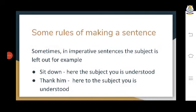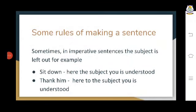In other words, we must have a subject to speak about, and we must say something — or predicate something — about that subject. The part which names the person or thing we are speaking about is called the subject of the sentence, and the part which tells something about the subject is called the predicate of the sentence. You will understand it better with the examples.